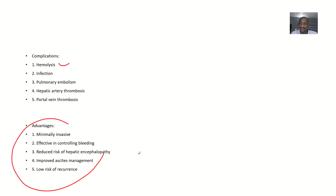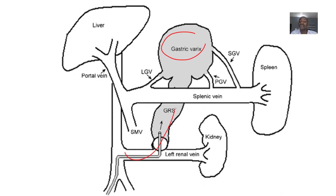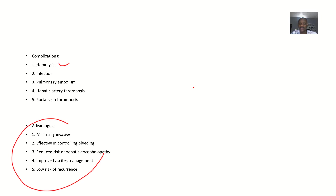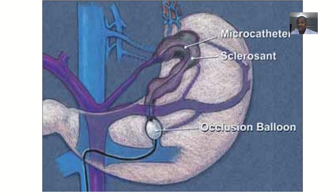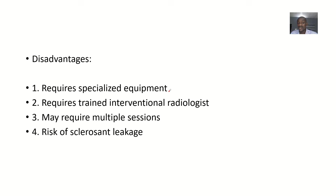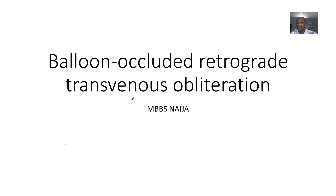Advantages: it's a minimally invasive method. It is effective in controlling or preventing bleeding because blood continues going through this dilated vein and there's a possibility it will eventually rupture. It also reduces the risk of hepatic encephalopathy, improves ascites, and there is a low risk of reoccurrence because you are totally blocking everything. Disadvantages: it requires specialized equipment and trained interventional radiologists, so not every regular doctor can do this procedure. It may also require multiple sessions to be eventually successful, and there's a risk of sclerosant leakage.